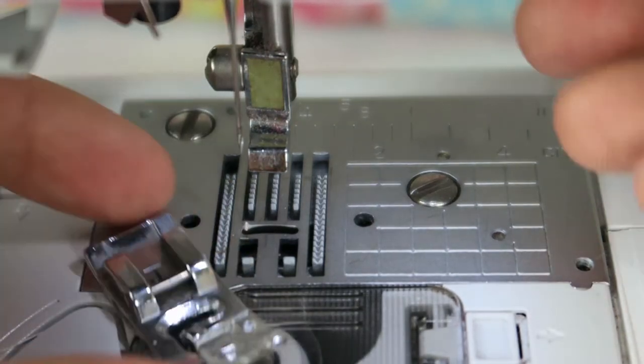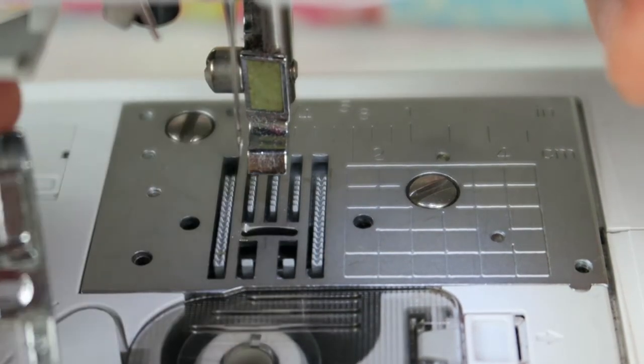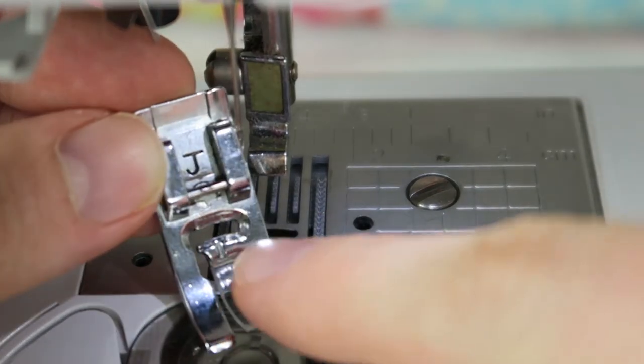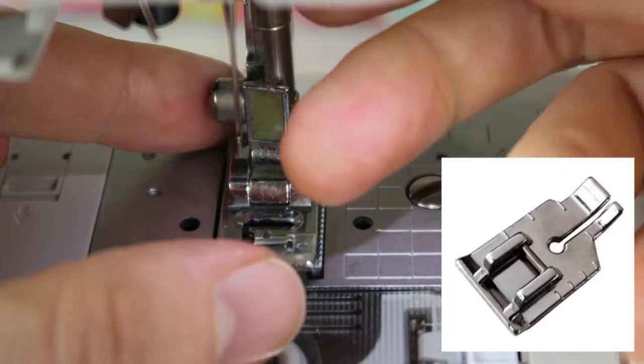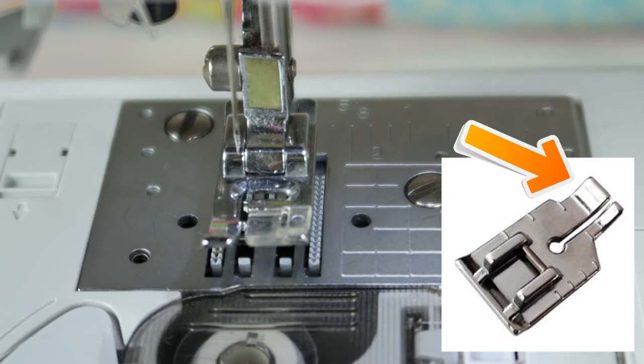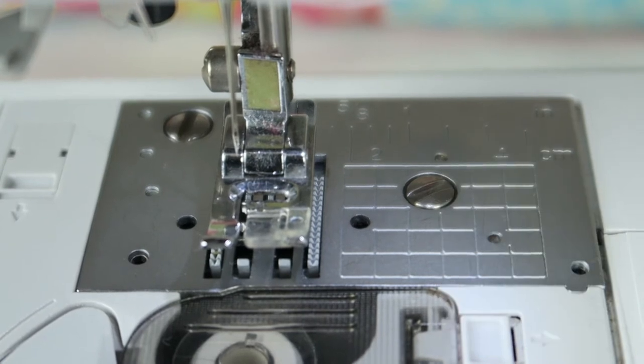Es gibt auch bestimmte Füßchen, Nähfüßchen, die eine Nahtzugabe haben, also 0,6 Millimeter für die ganzen Patchwork-Projekte. Und hier ist ein kleines Füßchen eingeblendet. Ich habe im Moment keines, aber hier auf der rechten Seite kann man sehen, dieses kleine Stückchen ist genau 0,6 Zentimeter oder 6 Millimeter breit. Das ist die Quarter Inch, die man immer beim Quilten und Patchwork-Arbeiten benutzt.